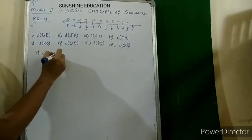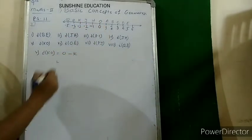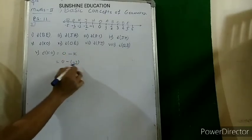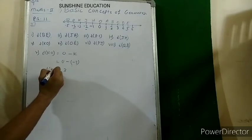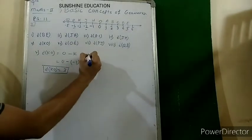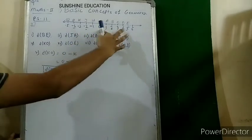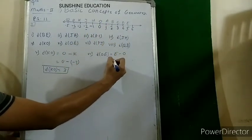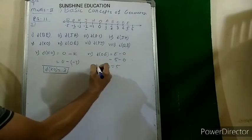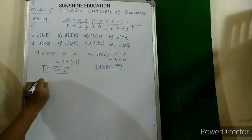Fifth: distance KO. O is at the right-hand side so O is greater. O minus K: coordinate of O is 0, coordinate of K is minus 3. So 0 minus (minus 3) = plus 3. Distance KO is 3 units. Sixth: distance OE. E is greater, so E minus O = 5 minus 0 = 5. Distance OE is 5 units.